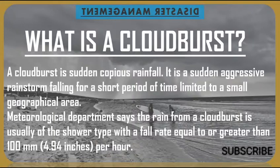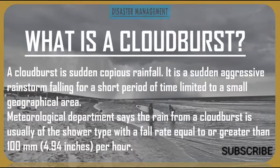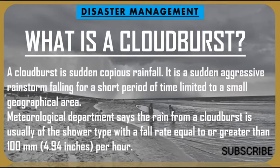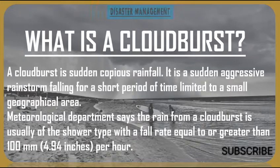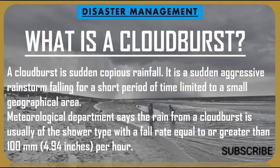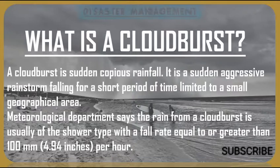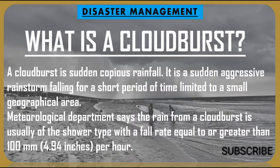In detail, a cloudburst is a sudden, copious rainfall — a sudden, aggressive rainstorm falling for a short period of time, limited to a small geographical area. The meteorological department says that the rain from a cloudburst is usually of the shower type, with a fall rate equal to or greater than 100 millimeters, that is 4.94 inches, per hour.